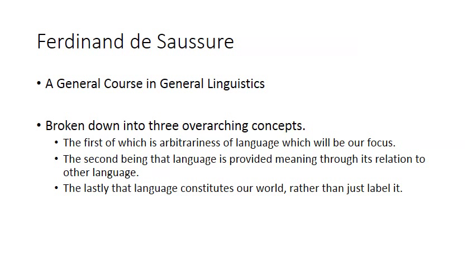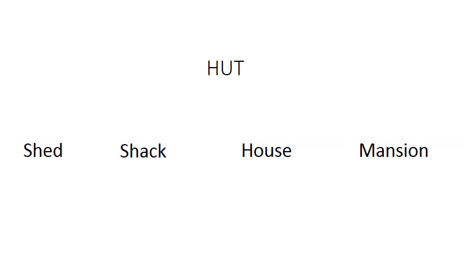The last point we want to make today is that language has the ability to constitute the meaning of our world around us, rather than just label it. The meaning we take away from anything that happens in our daily lives is all constituted through language — we apply words, those words evoke more ideas, we grow off of those ideas, and we continue this process of language. In my earlier explanations, I started to get into how some of these words hold connotations of wealth or poverty, or how 'shed' carries the connotation of storage. These words evoke ideas completely unrelated to them, which proves how words can constitute our reality.